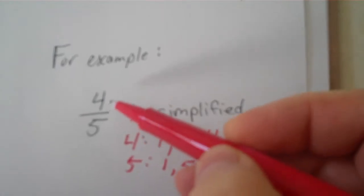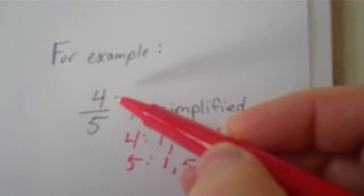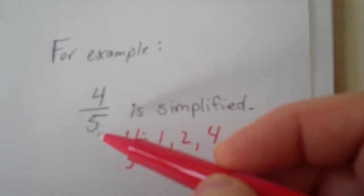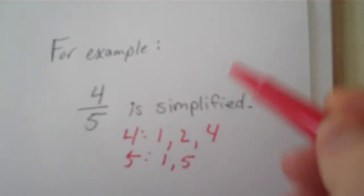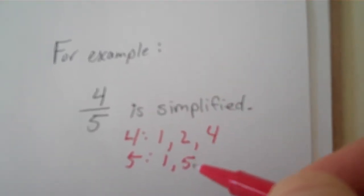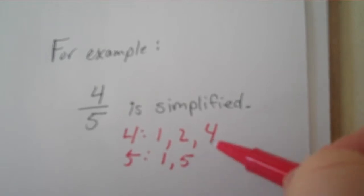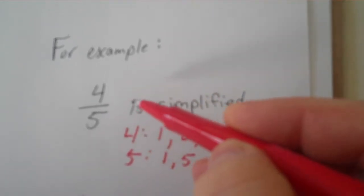Now, yes, I could divide them both by 1, but I would still have 4 fifths. I can't divide 5 by 2. I can't divide 4 by 5. And I can't divide 5 by 4. So, 4 fifths is simplified.